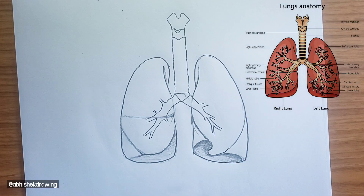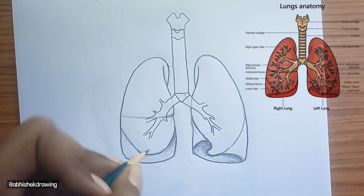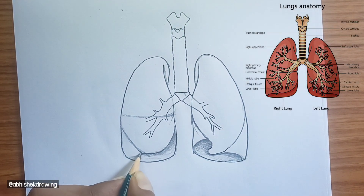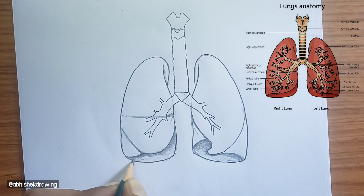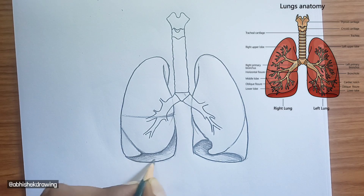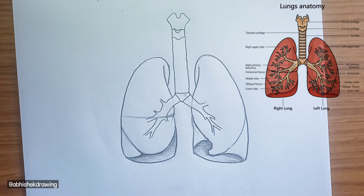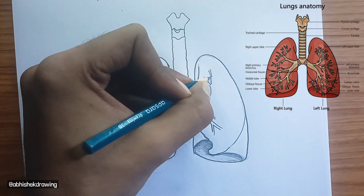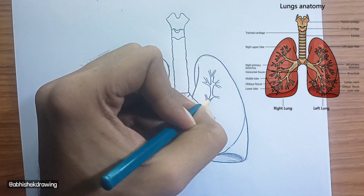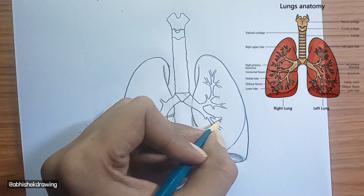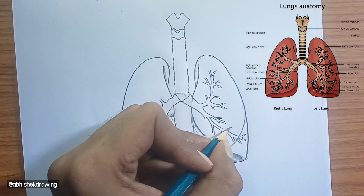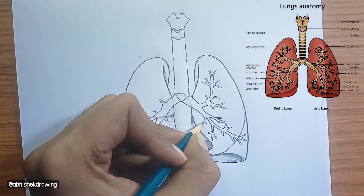The left lung is typically smaller and has two lobes: left upper lobe and lower lobe. These lobes are separated by the oblique fissure, which separates the upper and lower lobes. The left primary bronchus is the main airway branching off the trachea into the left lung. The cardiac notch is an indentation on the medial surface of the left lung which accommodates the heart.